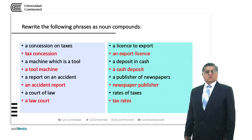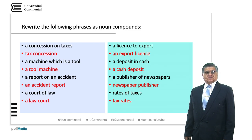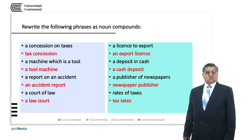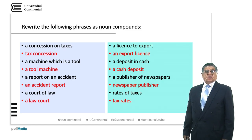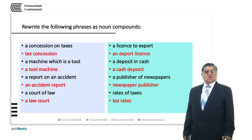In the first example, in blue, we have 'tax concession'. In the original phrase we have 'a concession on taxes'. What are we talking about — the taxes or the concession? We are talking about the concession. So normally, the main word, the head word, is in this case 'concession'. We are talking about concessions; the type of concession is tax. So we have 'tax concessions'.